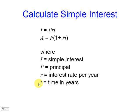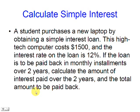T is the time in years, and A is the amount. Let's see this example. A student purchases a new laptop by obtaining a simple interest loan. This high-tech computer costs only $1,500, and the interest rate on the loan is just 12% per year. If the loan is to be paid back in monthly installments over two years, let's calculate the amount of interest paid over the two years and the total amount to be paid back.